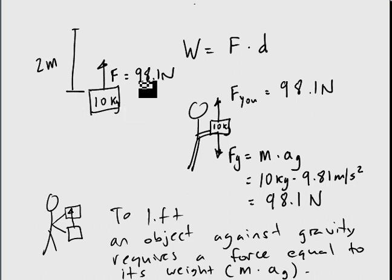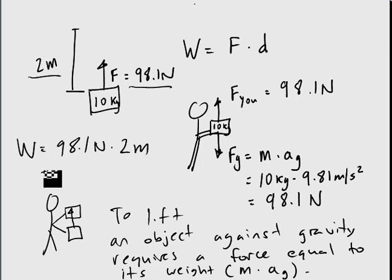So now we have our force and our distance. So we just have to plug them in. So you have 98.1 Newtons times 2 meters. That's going to give us 196.2 joules, because a joule is a Newton meter.